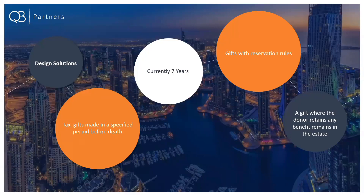When Nigel Lawson reformed capital transfer tax and introduced inheritance tax, they forgot about gifts with reservation of benefit. For a two-year period from 1984 to 1986, it was possible to make gifts, avoid IHT, but still retain a benefit from those gifts. The Inland Revenue managed to persuade Chancellor Lawson that if he didn't close this huge loophole, the tax would be effectively meaningless. So we now have very strict rules on gifts with reservation of benefit: if you reserve any benefit whatsoever in a gift, the gifted asset is treated as remaining in your IHT estate.